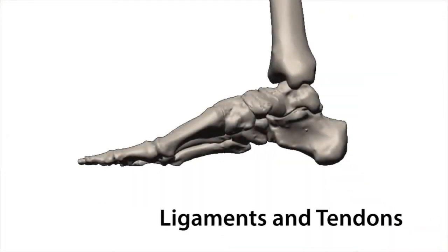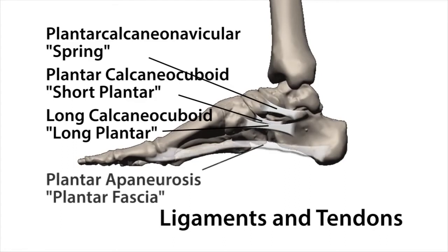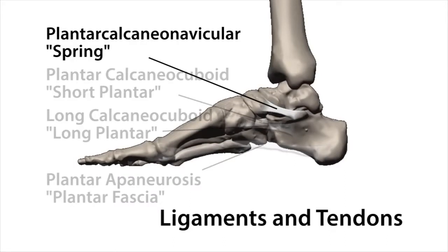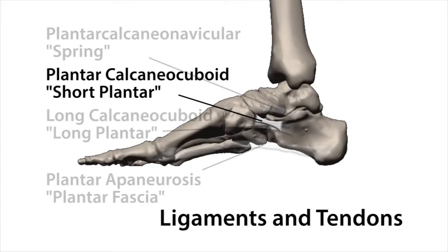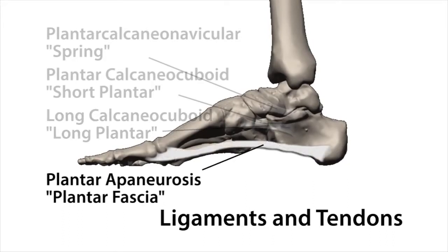Ligaments are connective tissue that hold bones together and stabilize the joints. They give strength and support to the bony structure. The four main ligaments are the spring ligament, short plantar ligament, long plantar ligament, and plantar fascia. The spring, or plantar calcaneo-navicular ligament, is a broad, thick band attached to the calcaneus and the navicular and supports the head of the talus; it maintains the arch of the foot. The short plantar, or plantar calcaneo-cuboid ligament, is a short, wide band which connects and stabilizes the calcaneus and cuboid. The long plantar, or long calcaneo-cuboid ligament, also connects the calcaneus and cuboid and extends to the third, fourth, and fifth metatarsals. The fourth main ligament is the plantar fascia, or plantar aponeurosis — a strong white fiber that runs longitudinally and is made up of three parts: central, lateral, and medial.